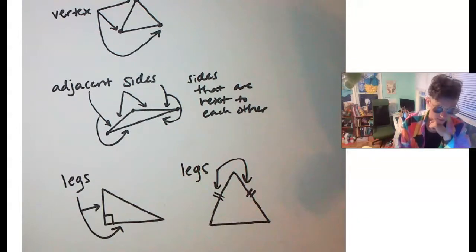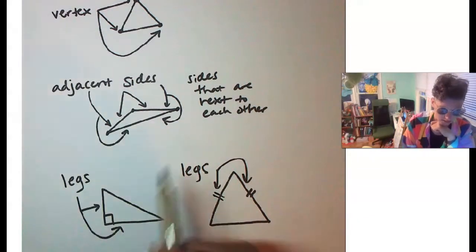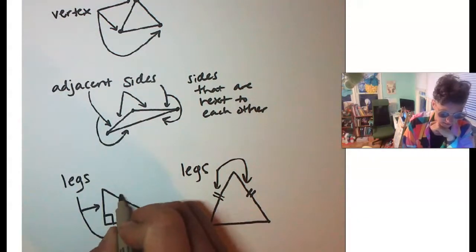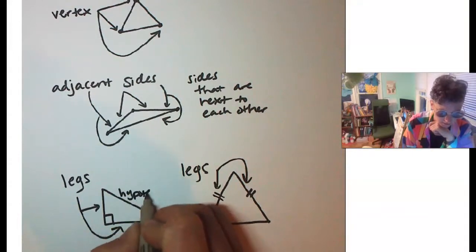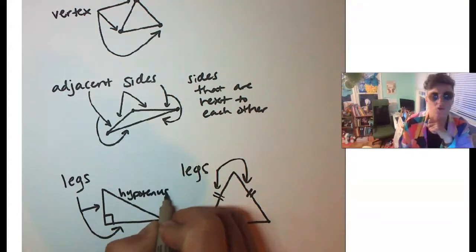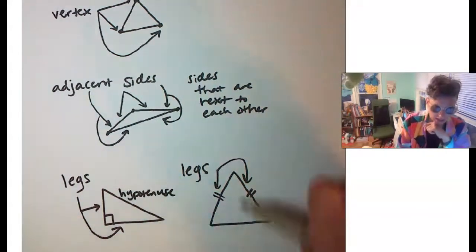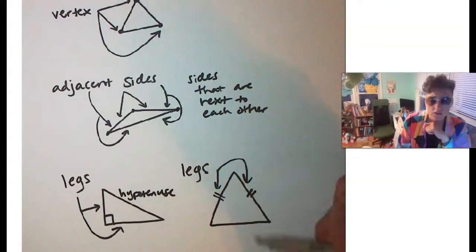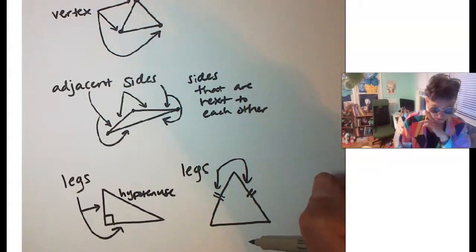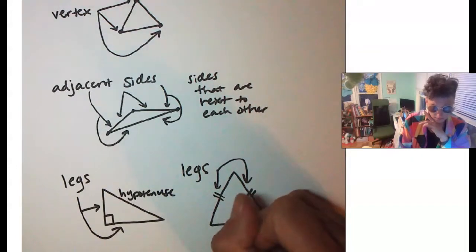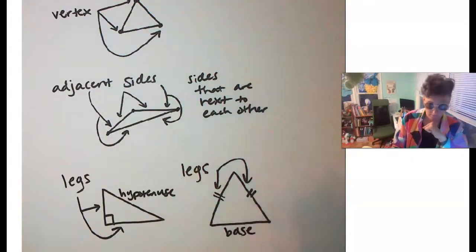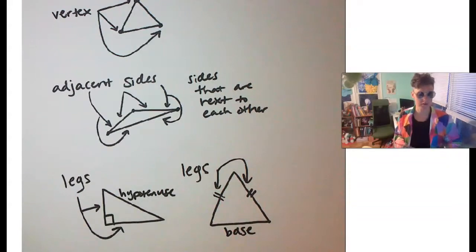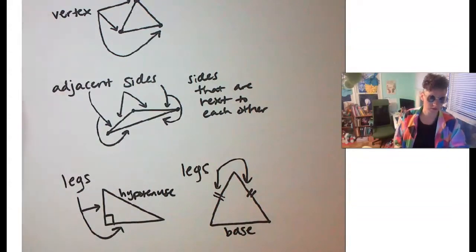Of course, we know the third side in a right triangle — that long side across from the right angle — is called the hypotenuse. And the non-congruent side of an isosceles triangle is called the base.